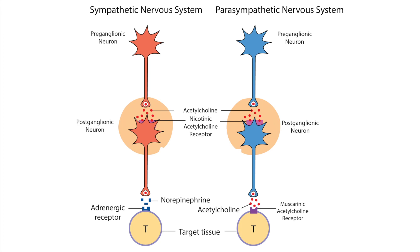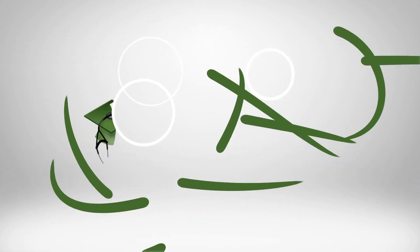It's important that the postganglionic neurons in these two systems are secreting different neurotransmitters because they're acting on the same effector organs. So by releasing different neurotransmitters, the effector organs can express receptors for each. And by responding to each type of neurotransmitter, the organ is able to drive opposite responses.